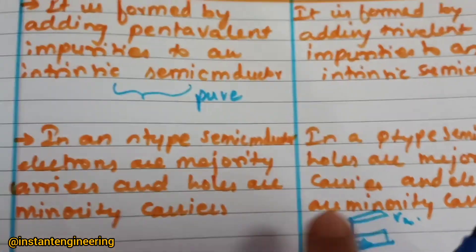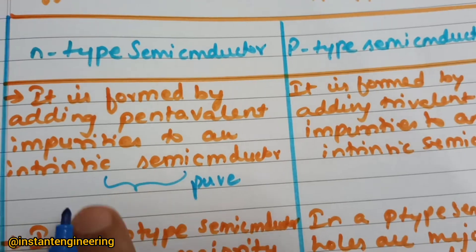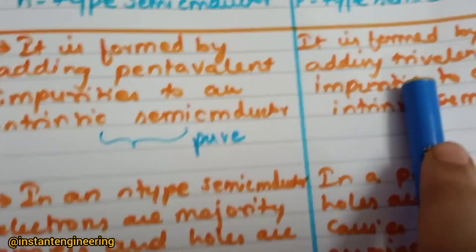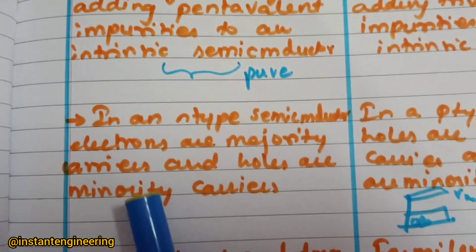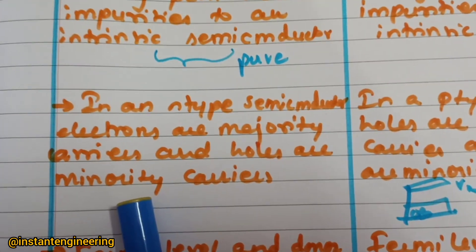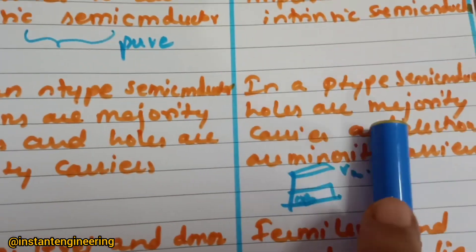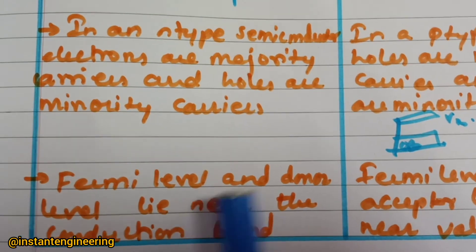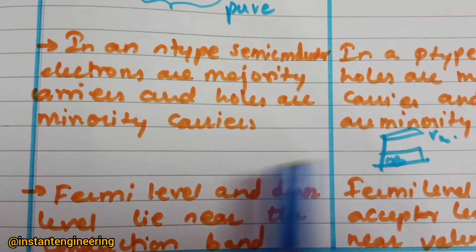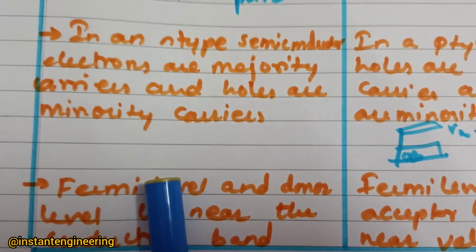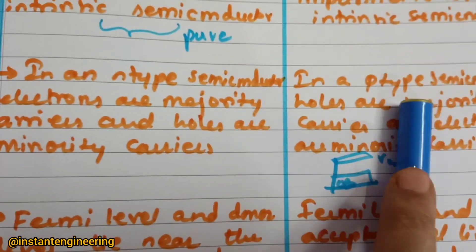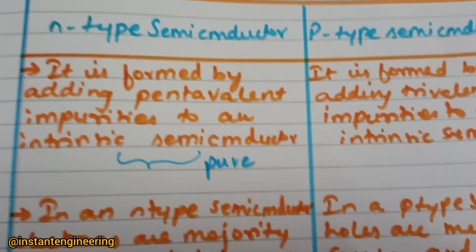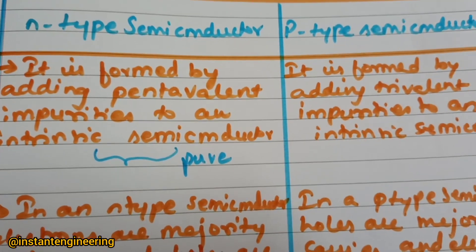So these are the basic points: first, the impurities added — 5 electrons for n-type and 3 for p-type. Because of that you can understand what the majority carriers are. And for the energy level diagram, n-type will be near the conduction band and p-type will be near the valence band. Please make sure you understand and remember these.